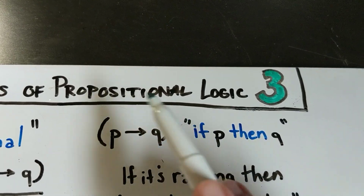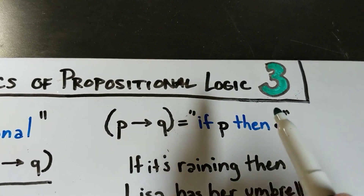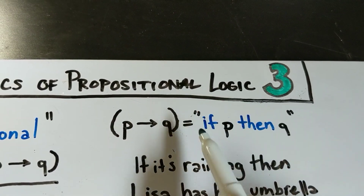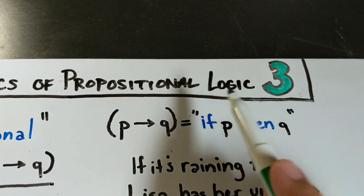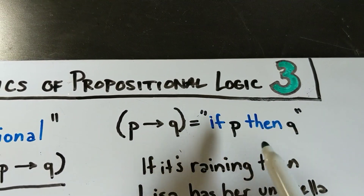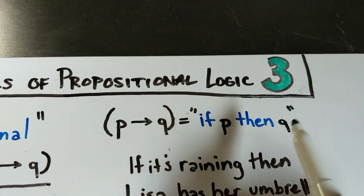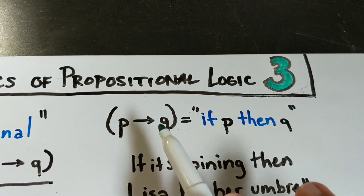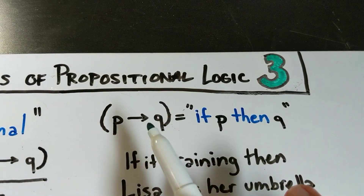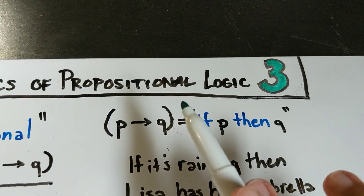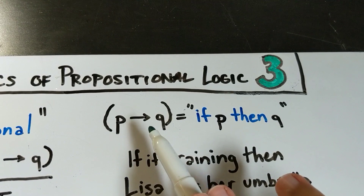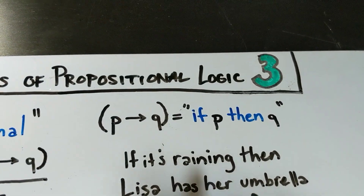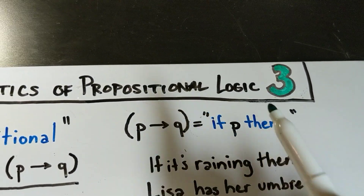We would read this out loud as 'if P, then Q.' Now, this is a little bit misleading because if-thens have a lot of funky implications to them in natural language that this statement does not have. So we're going to focus on the truth table for this operator rather than on what it sounds like, and then I'll explain why it's not exactly what it sounds like.